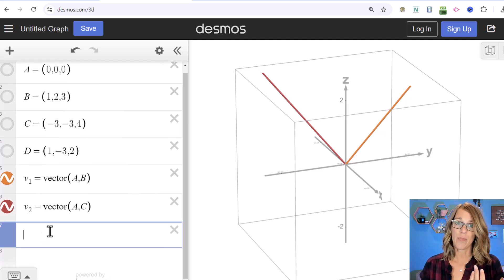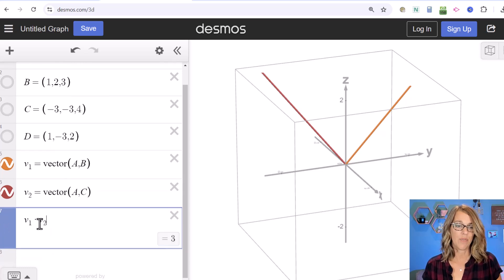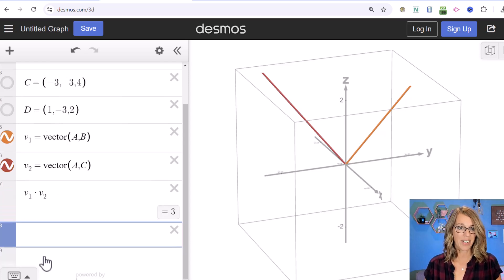We can do the dot product and cross product. Let's do the dot product first. The dot product returns a scalar. To do the dot product, we use the asterisk for multiply: v₁ * v₂. That dot product equals 3.